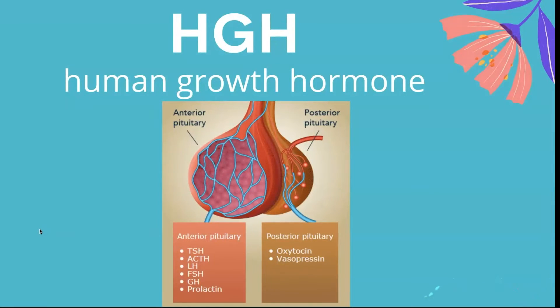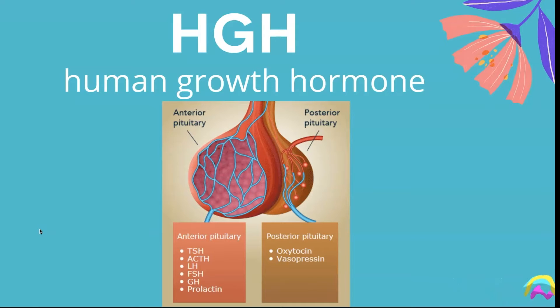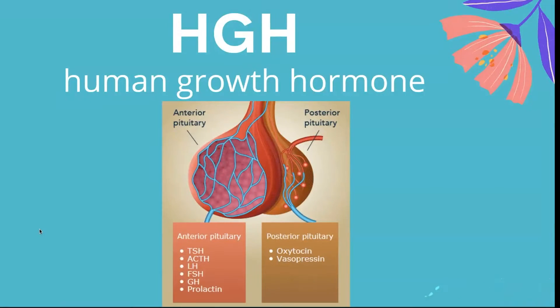HGH is human growth hormone — a small protein made by the pituitary gland and secreted into the bloodstream. Growth hormone essentially regulates growth, metabolism, and body composition.